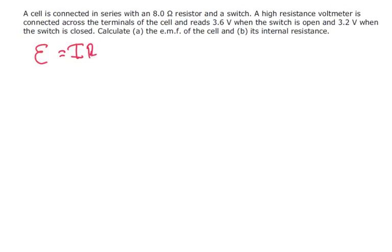Now we know when the switch is open, the terminals actually become the EMF. So we know that it's 3.6 volts. We also know IR is therefore equal to 3.2 volts when the current is flowing. So we need to find out what's the current.